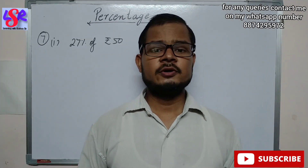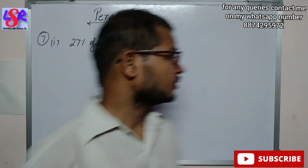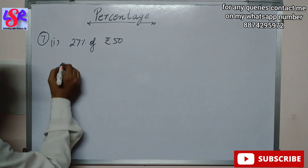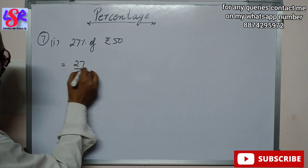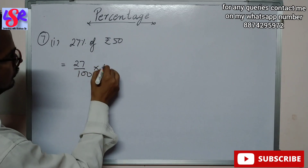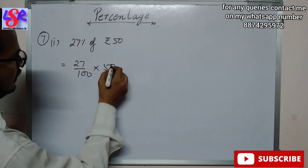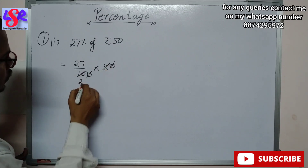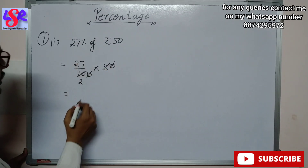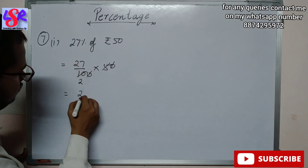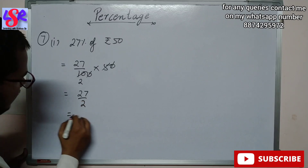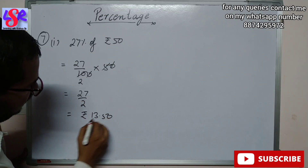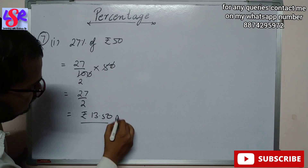Now we are moving to Question 7. Here we have to find the value of 27% of rupees 50. This can be written as 27 upon 100 into 50. The zeros cancel to give 27 upon 2, which equals rupees 13.50 as the answer.